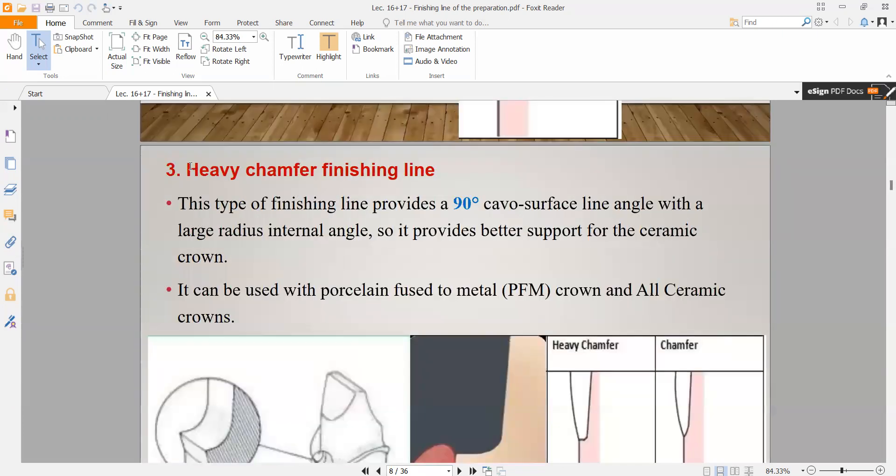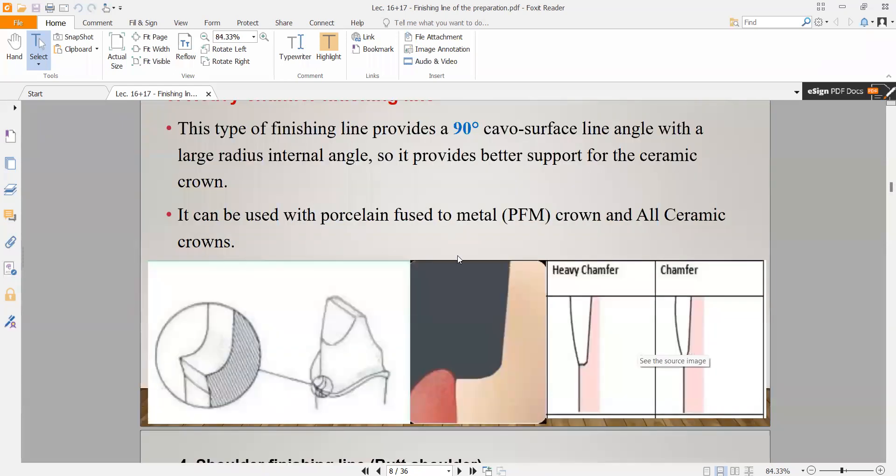The third type is heavy chamfer. It's the same preparation exactly. The difference is instead of the cavosurface being 130 to 160, here it will be 90 degrees. This finishing line provides a 90-degree cavosurface line angle with large radius internal angle, so it provides better support for the ceramic crown.